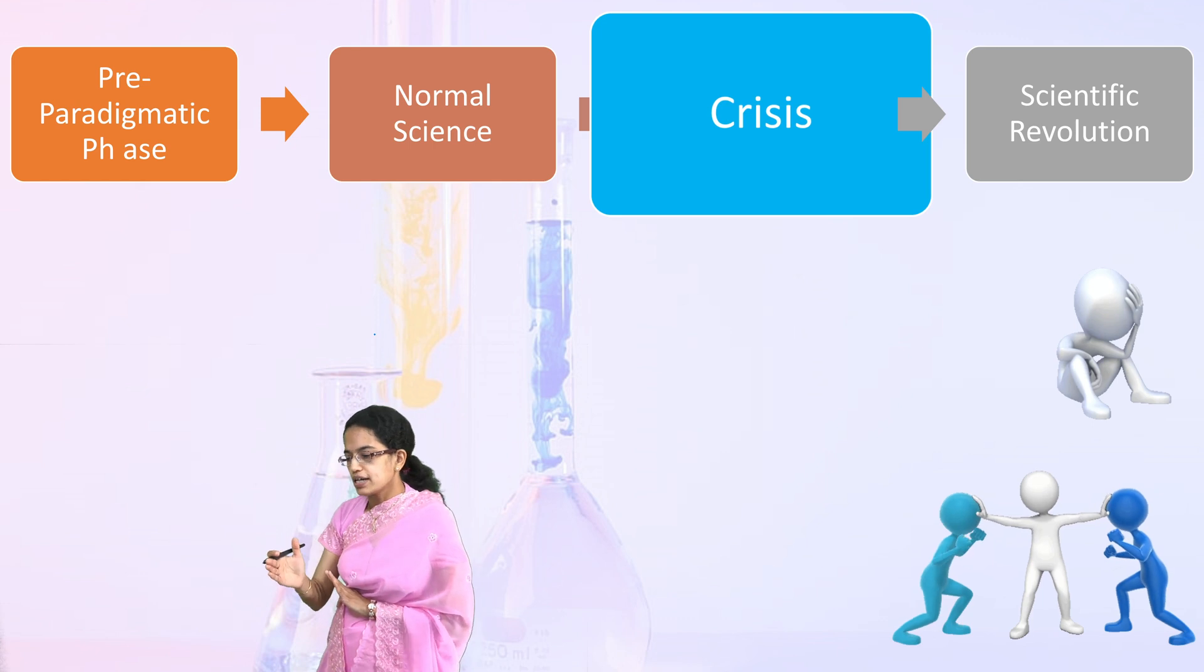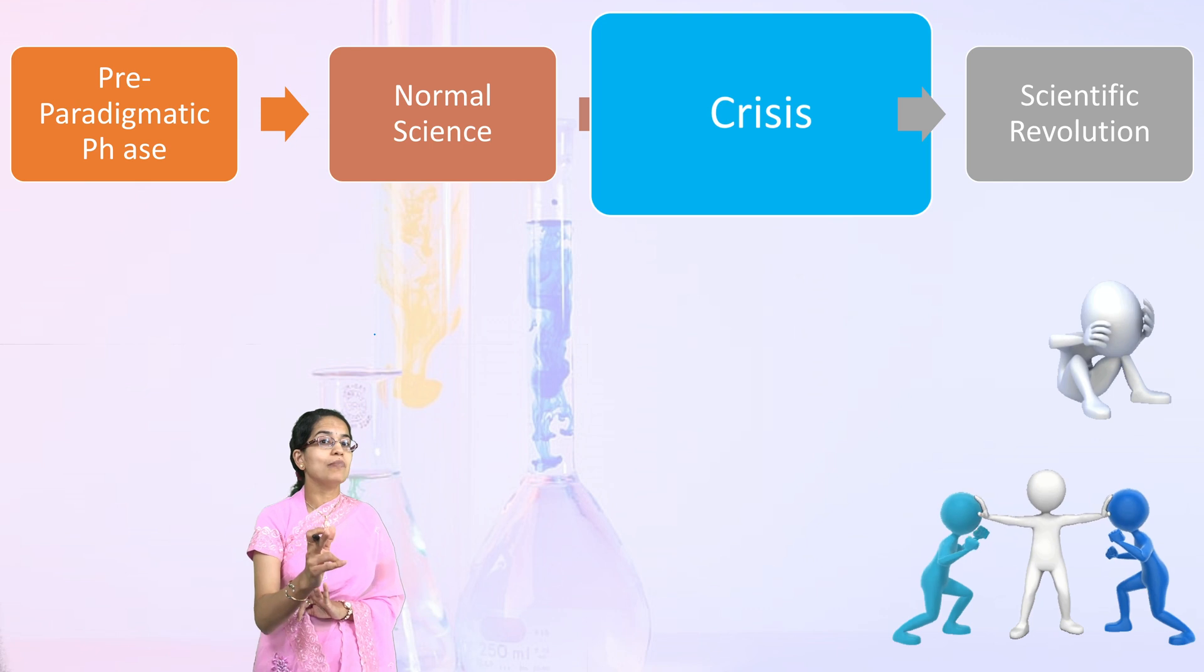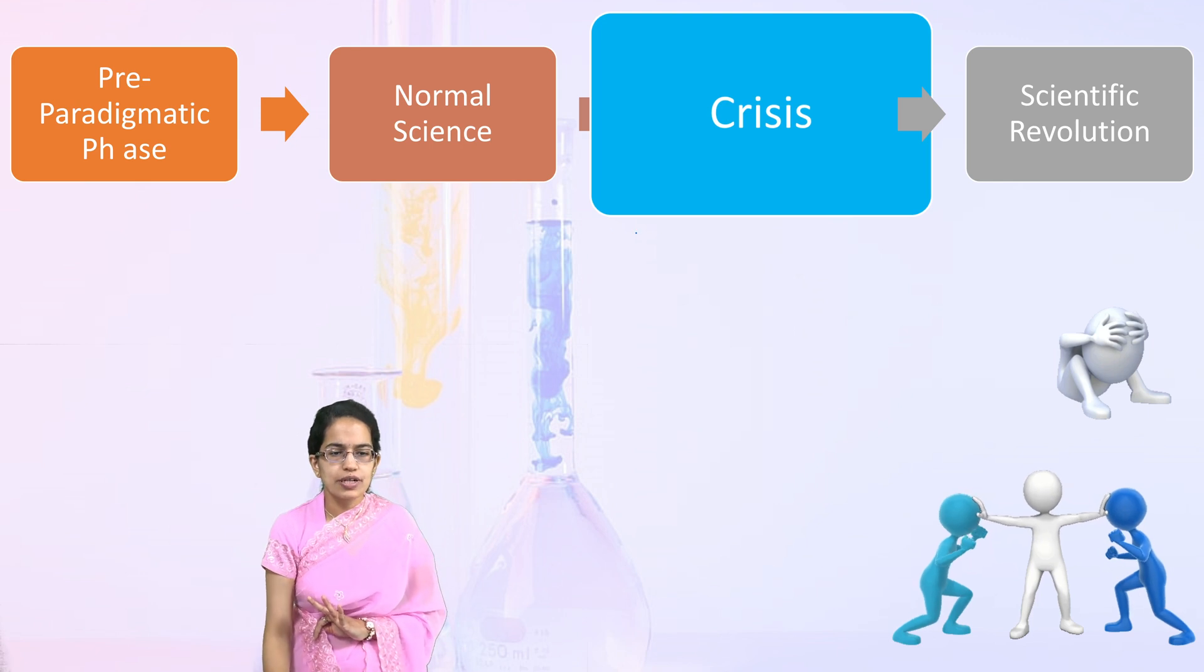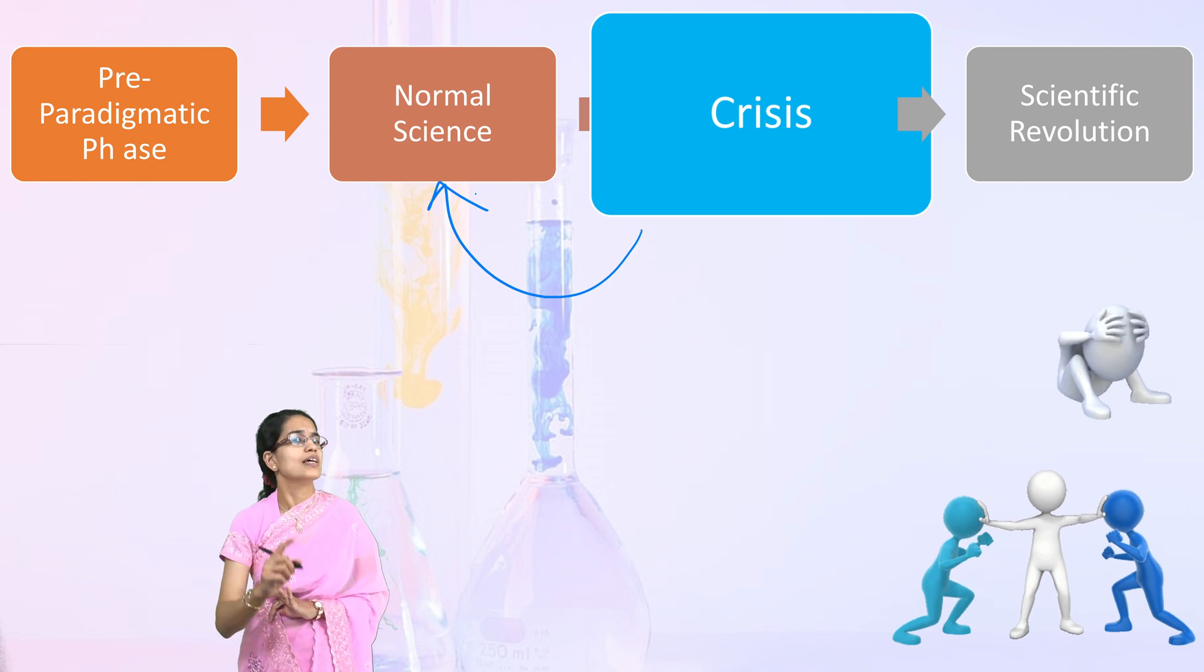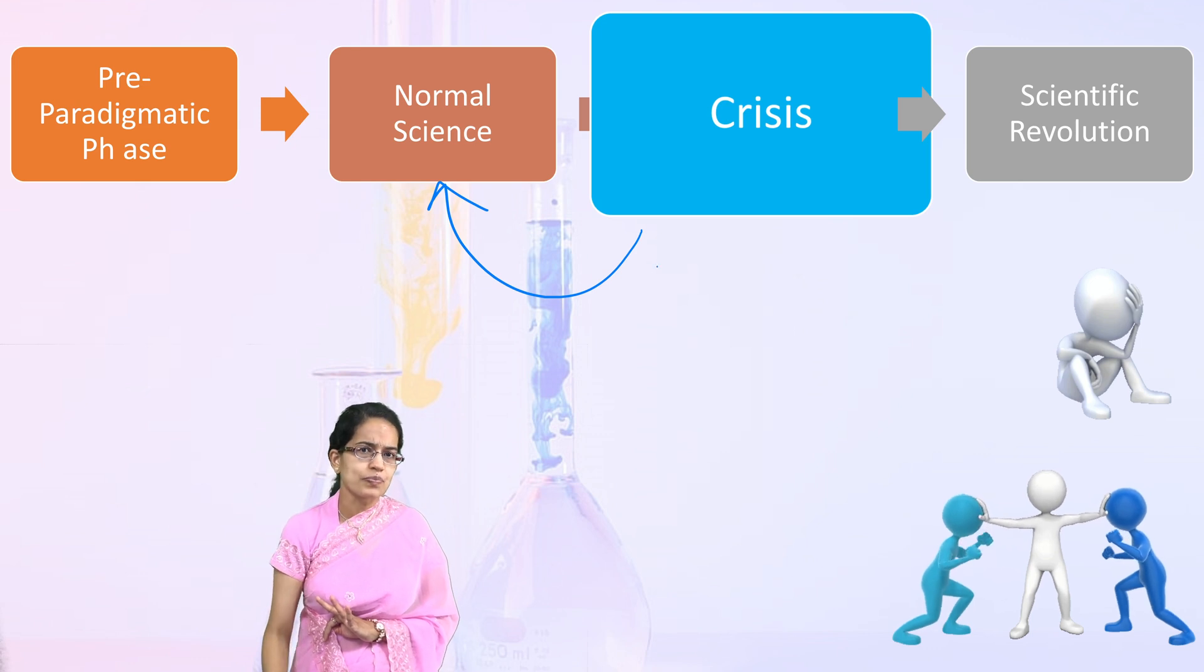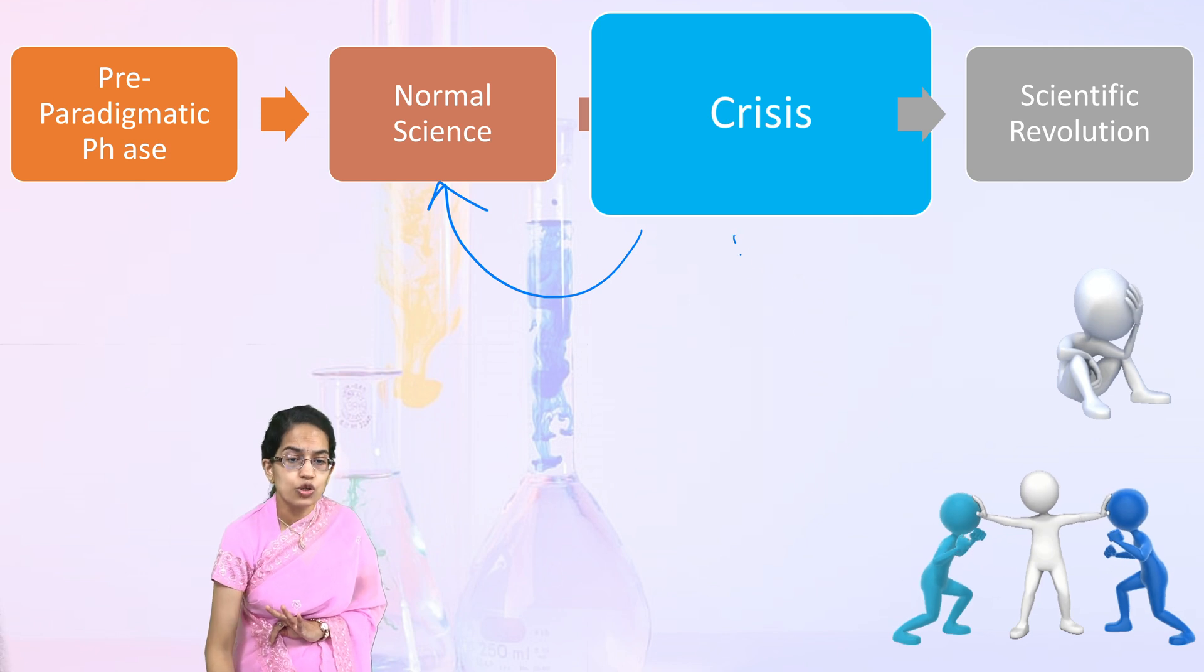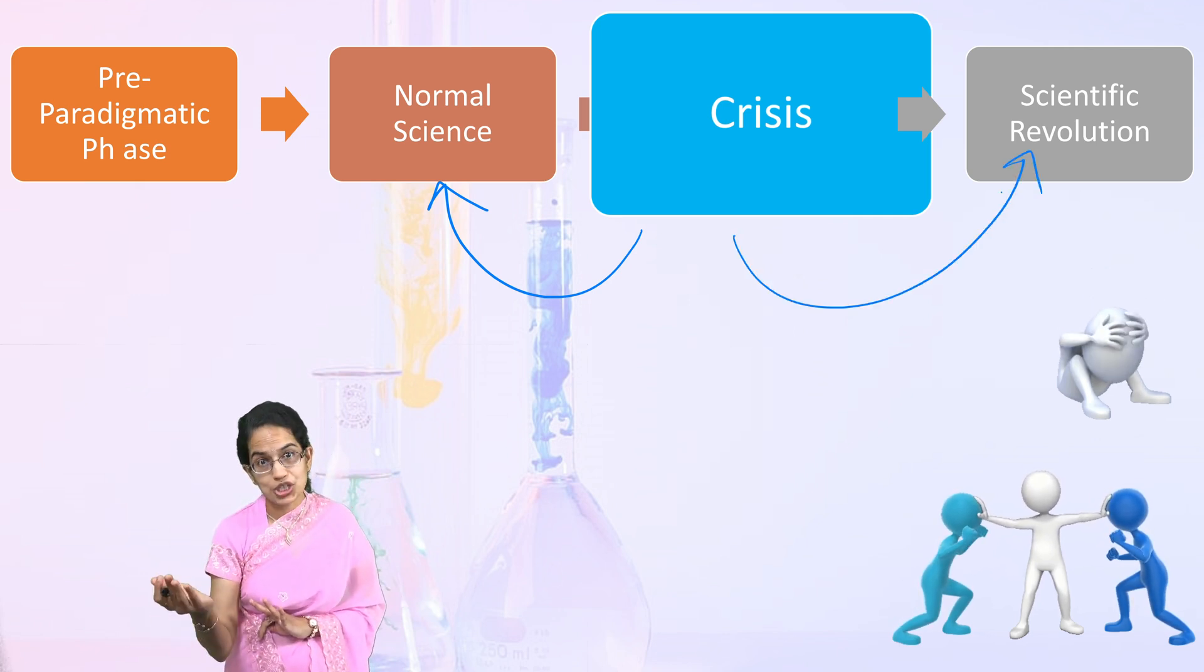Here there could be two things that could occur. Either you are able to solve the crisis that was there and if you are able to solve the crisis, you would move back to normal science because you are able to solve the crisis situation. In case you are not accepting the normal science and there was a crisis, you create a new concept and that could lead to a scientific revolution or a paradigm shift.